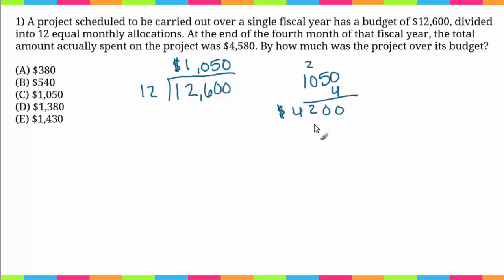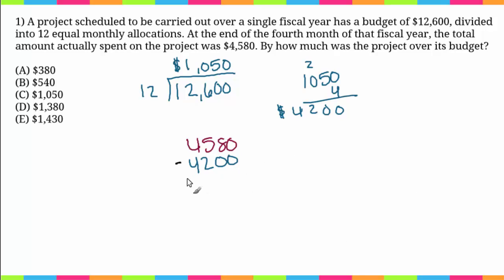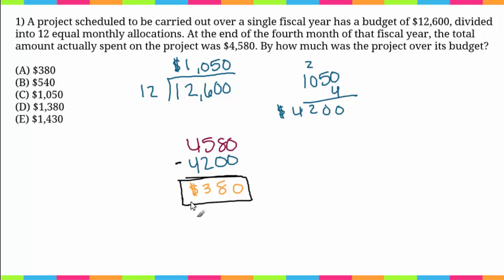Now it says the total amount actually spent was four thousand five hundred and eighty. To figure out how much it was over budget, we subtract our budgeted amount from our actual spending amount: four thousand five hundred eighty minus four thousand two hundred gives us three hundred and eighty dollars. That's our final answer.